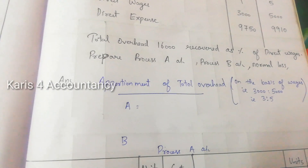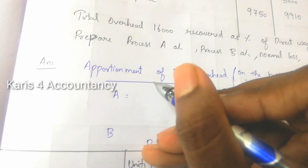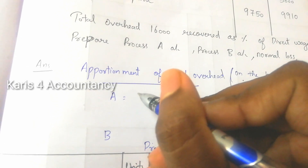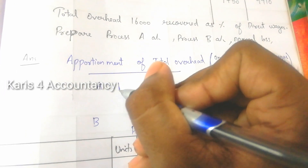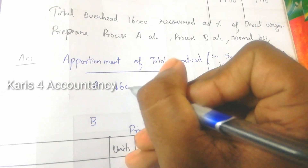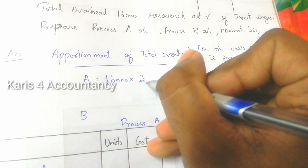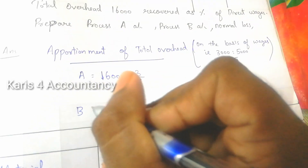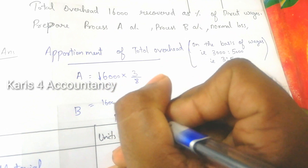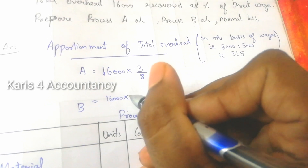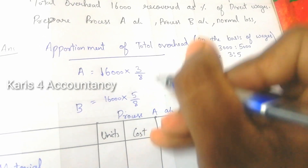So A is equal to 16,000 × 3/8, and B is equal to 16,000 × 5/8.